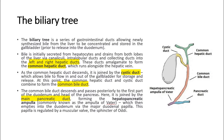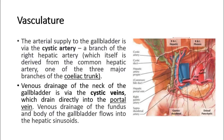This papilla is regulated by a muscular valve, the sphincter of Adi. For its vasculature, the arterial supply to the gallbladder is via the cystic artery, a branch of the right hepatic artery, which itself is derived from the common hepatic artery, one of the three major branches of the choleic trunk. Venous drainage of the neck of the gallbladder is via the cystic veins, which drain directly into the portal vein. Venous drainage of the fundus and body of the gallbladder flows into the hepatic sinusoids.